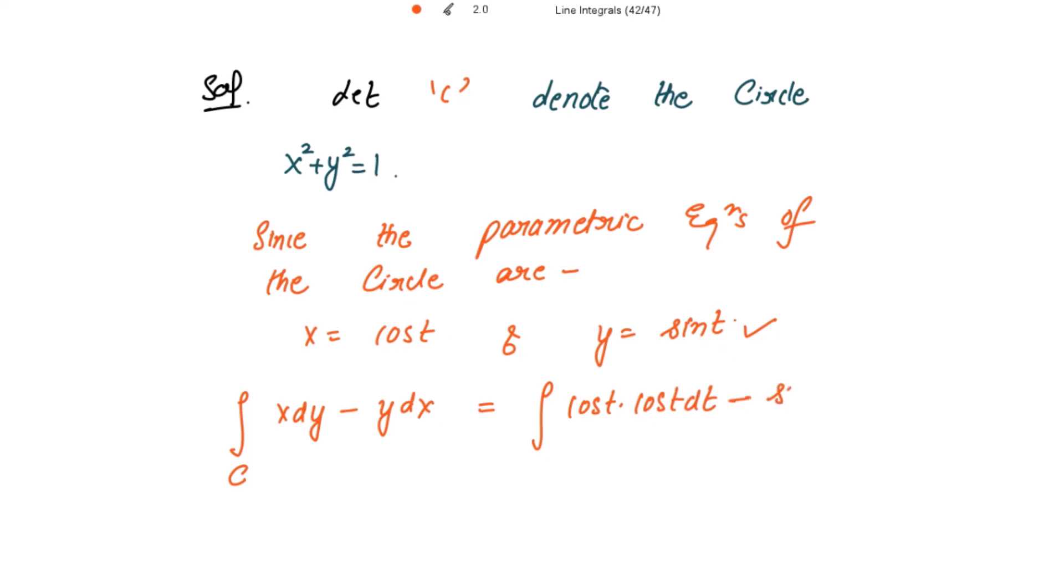Minus y is sin of t and dx. The derivative for x is negative sin of t dt, so this becomes positive sin of t dt.